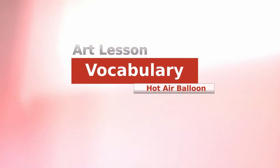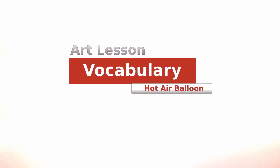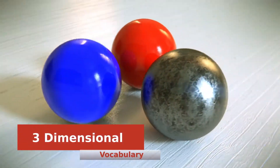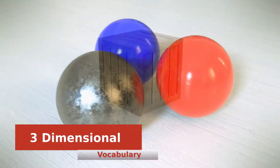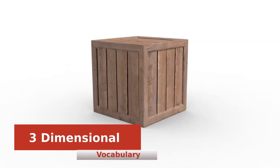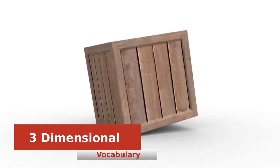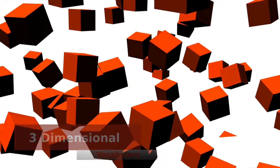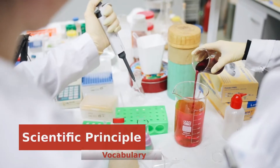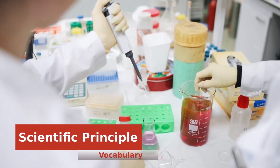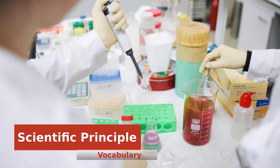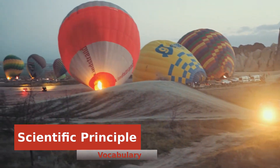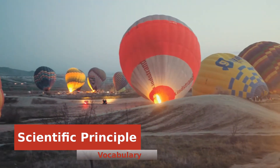As usual let's start with some vocabulary to help us better understand the lesson. 3D means three-dimensional or having three dimensions. For example a box is three-dimensional — it's solid and not thin like a piece of paper. It has a top and a bottom, left and a right side, as well as a front and back side. Scientific principle is a fancy name for the general rules followed while doing science or rules that nature tends to follow. With hot air balloons, the fact that hot air is lighter than cold air is a scientific principle.